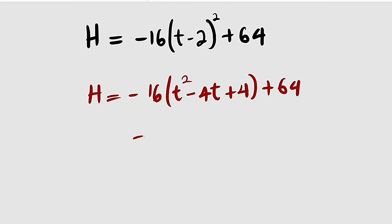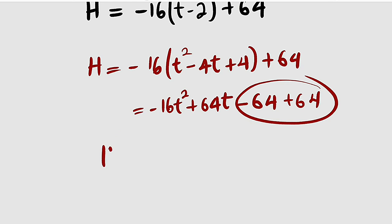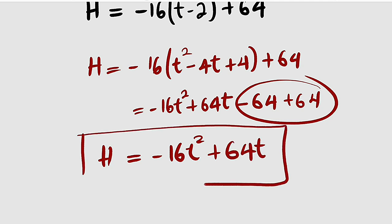Negative 16 times t squared will give us negative 16t squared. Negative times negative is positive, 16 times 4 is 64t. Negative times positive is negative, 16 times 4 is 64. Then we have our 64. This will give us 0. So therefore, our function h is equal to negative 16t squared plus 64t. This is the quadratic equation used to construct that graph.